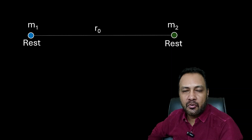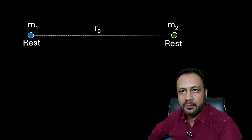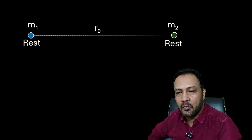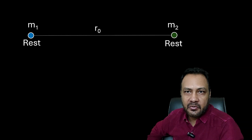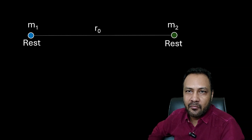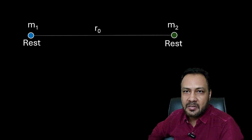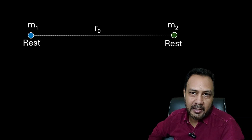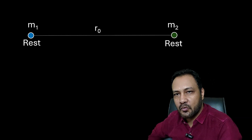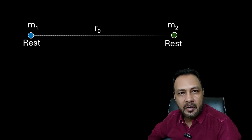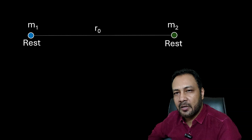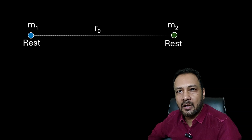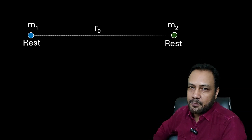Hey, dear friends, this is Prajish Chowdhury of Quantum Guru. Let's see this very beautiful question on gravitation. In this question, M1 and M2 are two point masses separated by a distance R0. The only force acting between them is their gravitational force. They are released from rest and we have to find at what time they will collide.